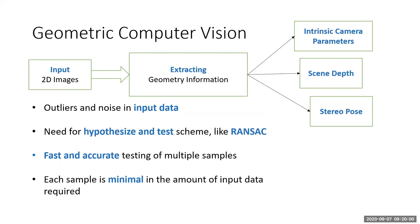This input data can have outliers. For example, when estimating a homography induced by a scene plane, points in 2D images should lie on the same plane, but there can be outliers or noise in the measurements. This requires testing multiple samples. To achieve robustness and accuracy, a very conventional and highly successful approach is a RANSAC-like loop, where we randomly select samples of 2D-to-2D correspondences, test them, and select the best ones. The requirement is to test fast and accurately from these samples.